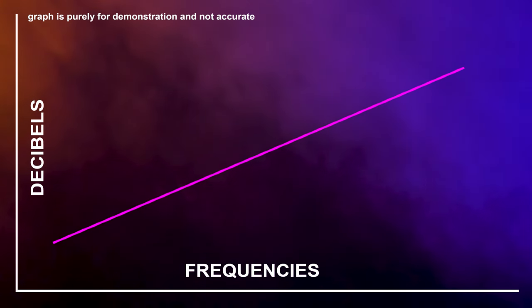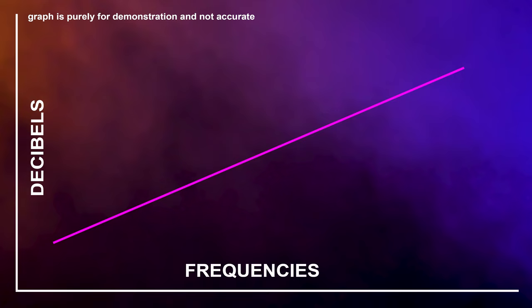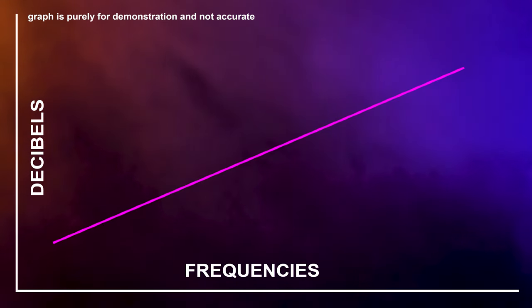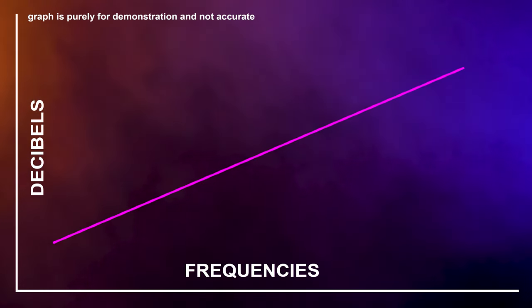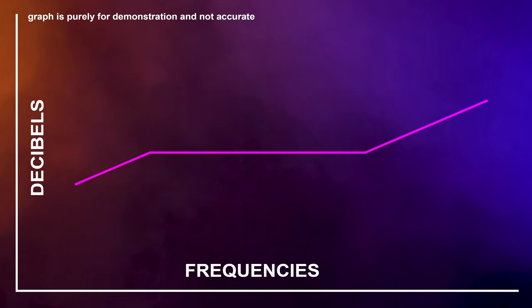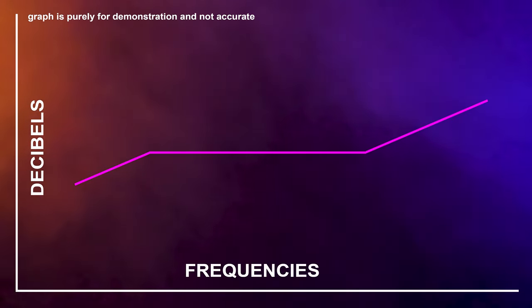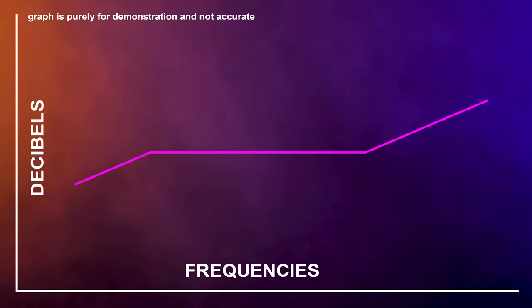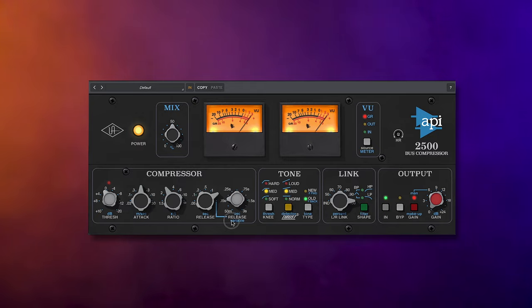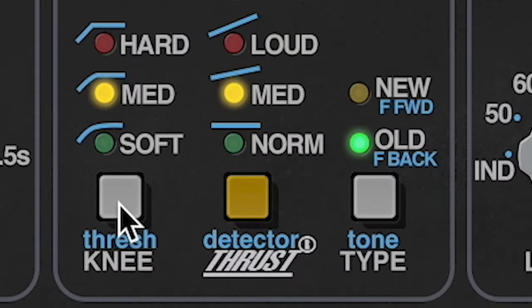The Loud setting uses a 3dB per octave rising linear slope, which is the exact opposite of a pink noise curve, resulting in a more punchy sound with balanced high frequencies and powerful midrange. The Medium setting uses a frequency slope that is flat between about 200Hz and 3,500Hz, while having the 3dB per octave slope of the Loud setting above and below those frequencies. The Normal setting removes these special settings so the API 2500 works as a normal compressor.